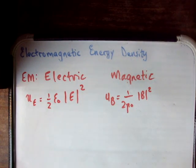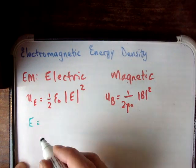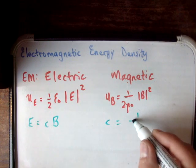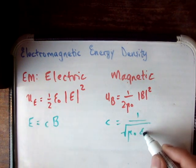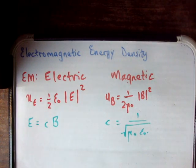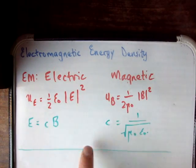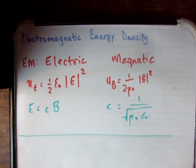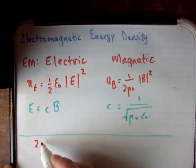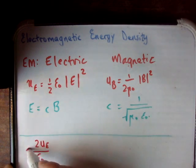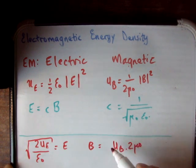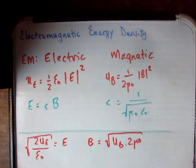To prove that, I'll use two more formulas. First: the amplitude of the electric field equals the speed of light times the amplitude of the magnetic field, i.e. E = cB. Second: the speed of light equals 1 over the square root of μ₀ε₀. These come from Maxwell's equations. I'll rearrange the energy densities as: E = √(2u_e / ε₀) and B = √(2u_b · μ₀).